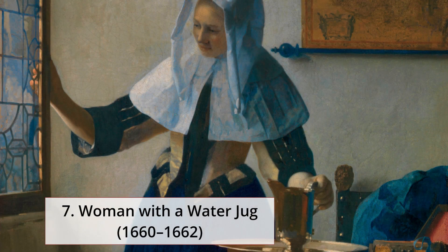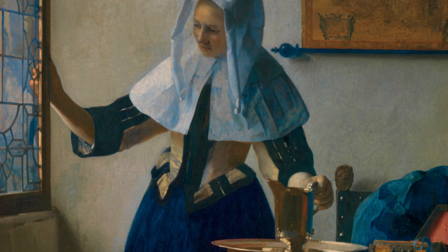7. Woman with a Water Jug, 1660–1662. A young woman is found in the centre of the picture. She is opening a window with her right hand while she holds a water jug with her left hand. This jug rests on a larger platter. Both of these, among other objects, are upon a table.